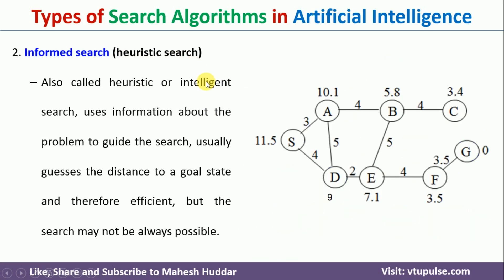Now coming back to the second type, called as informed search or heuristic search. Whenever you are present in a particular state and there are multiple paths from that state, it will use some heuristic function and based on that it will make a decision — should I choose the first path or should I choose the second path? That is the main thing that happens in informed search technique.